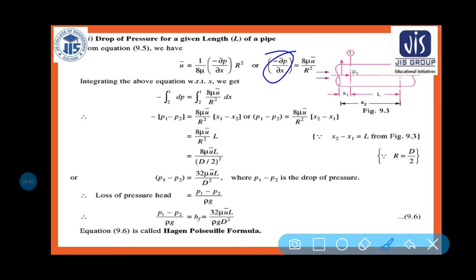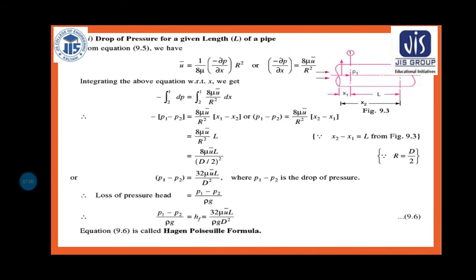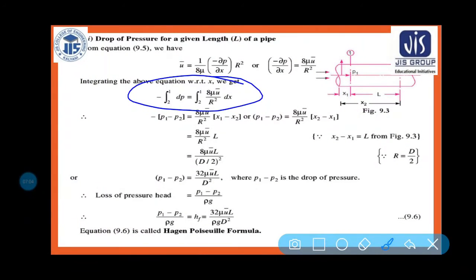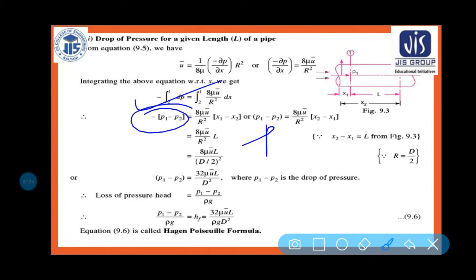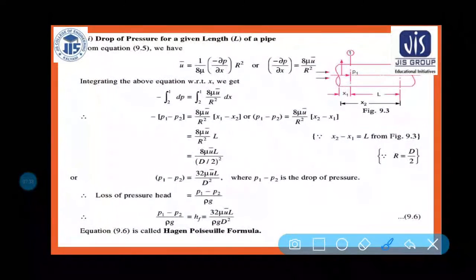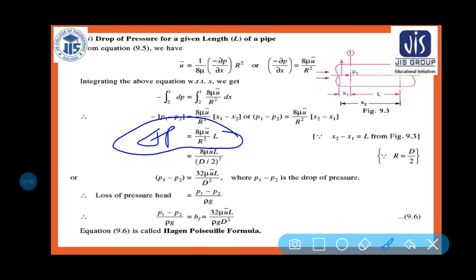The pressure is decreasing, so the limit runs from p₁ to p₂. Integrating both sides: the left gives p₁ - p₂, and the right gives (x₁ - x₂). Ultimately we get: ΔP = 8μu̅L/R². This is a very important formula for solving numericals.